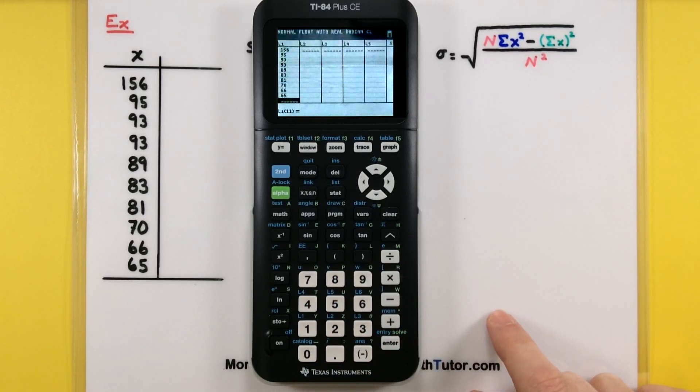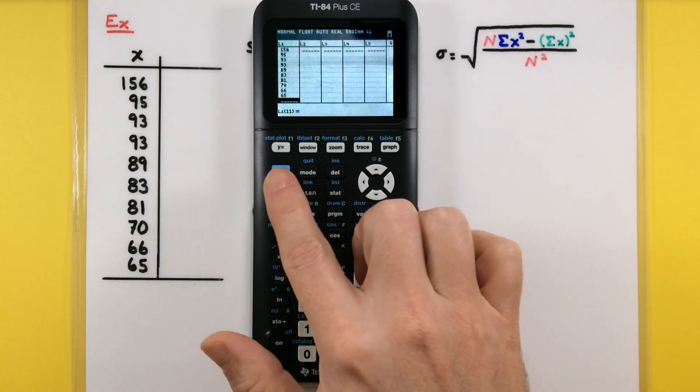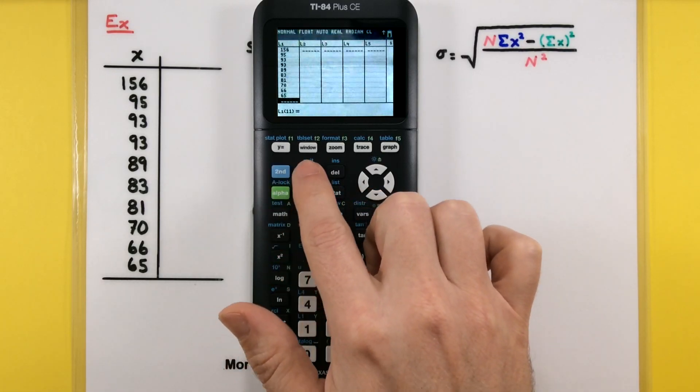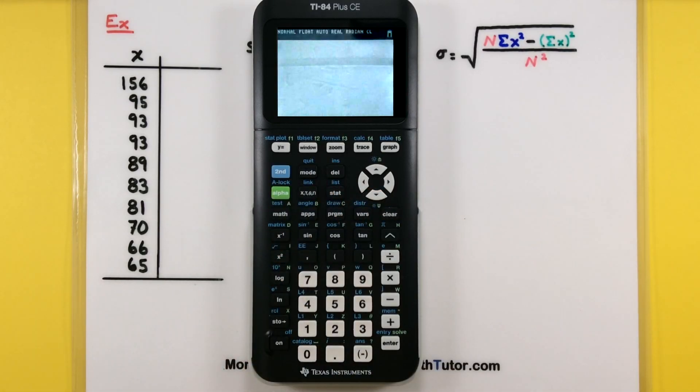All right, that didn't take too long. I got 10 different numbers. It all looks great. Now that they're in the calculator we need to go back out of this screen and get to our calculation spot. So I'm going to press second quit. Don't worry, the data is still in the calculator. It's still safe. We just need to get to a different screen.